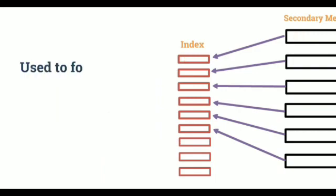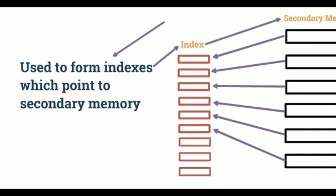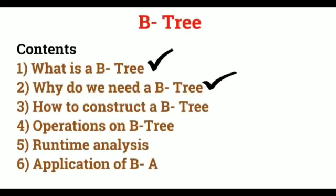Now, the problem is the insertion and deletion. If we insert something in secondary memory, all the indices should be updated. Deletion also follows the same term. In order to deal with this problem, we use tree data structure, especially balanced tree. So, this B-tree data structure are used to form indices which point to secondary memory. Very good. Now you know why do we need a B-tree.